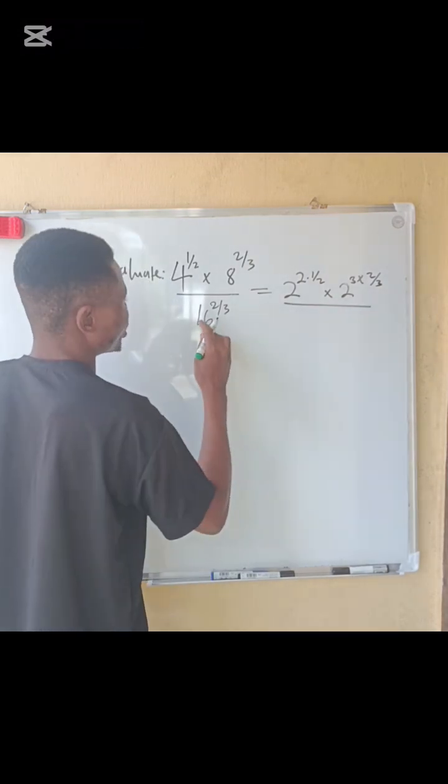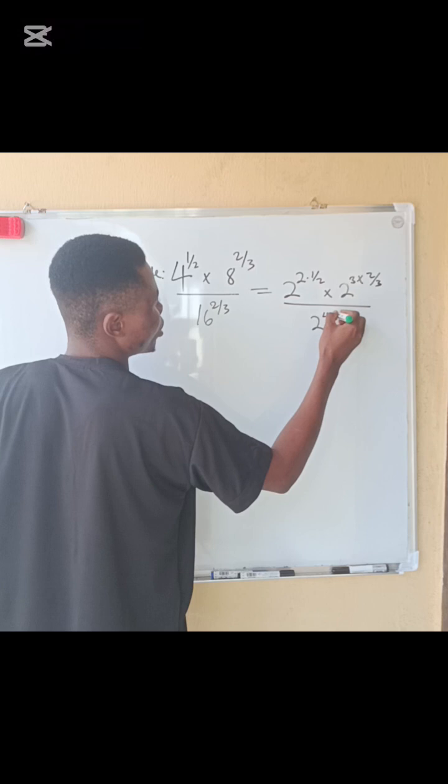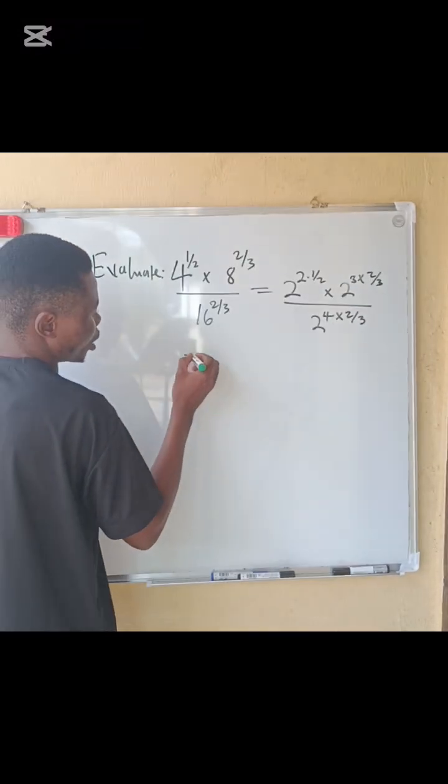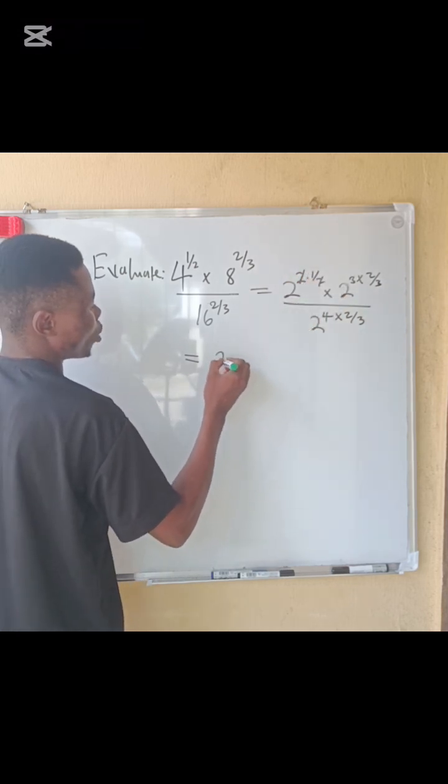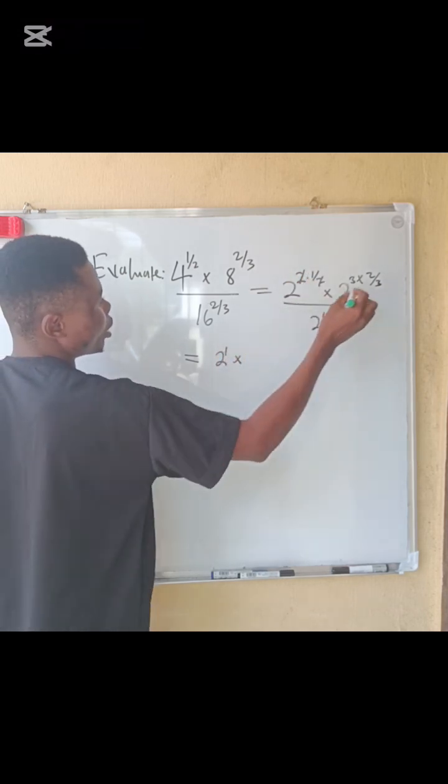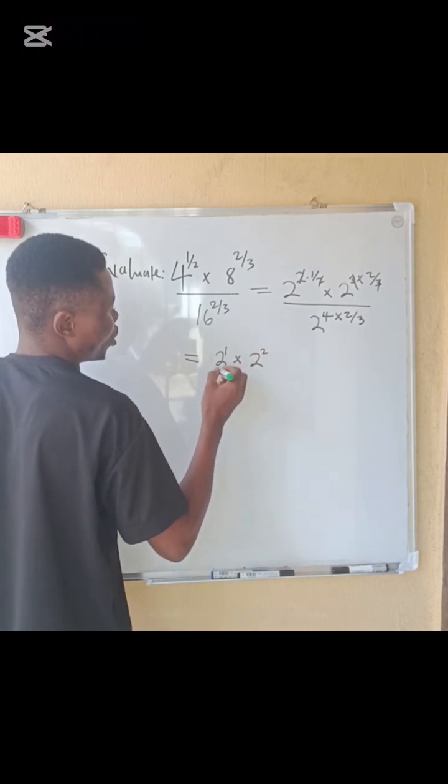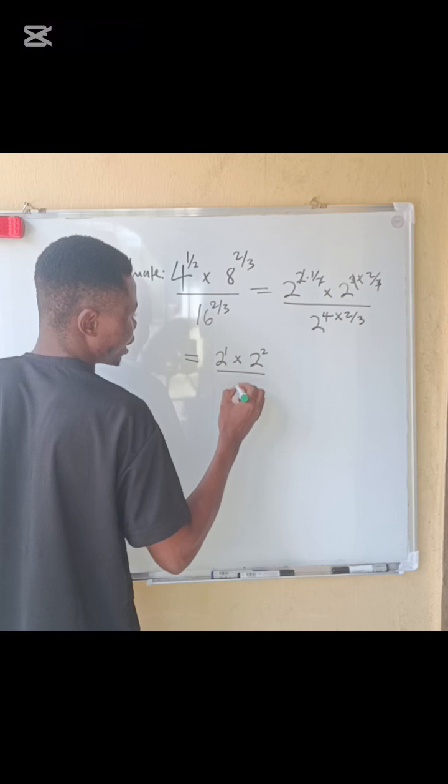Divided by 16, we can reduce 16 to 2 power 4, multiplied by 2 power 3. We proceed. This one can go with this, right. You know that 2 power 1 multiplied by 3 will go with 3. We now left with 2 power 2, all over 4 times 2 that is 8, so 2 power 8 over 3.